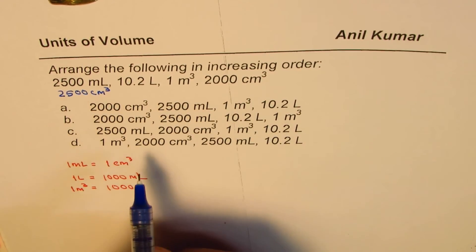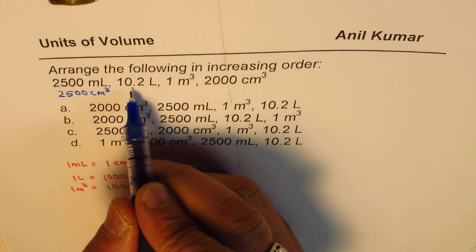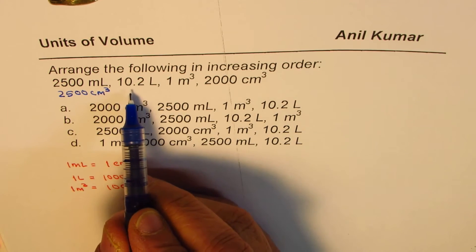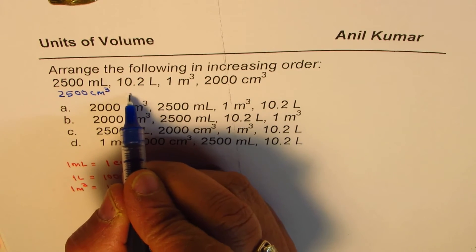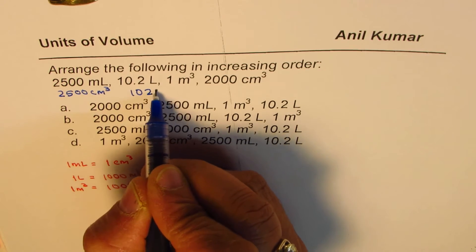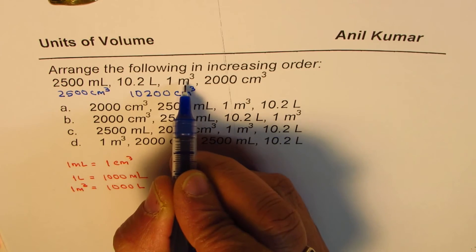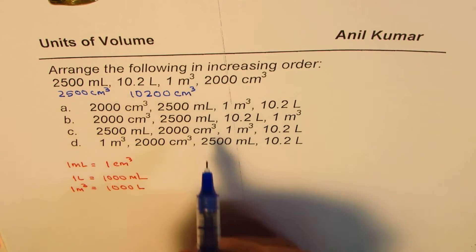Let's write them down in centimeter cubes. Now liter, you've got 1000 centimeters, so this will be multiplied by 1000. So it will become 10,200 centimeter cube.